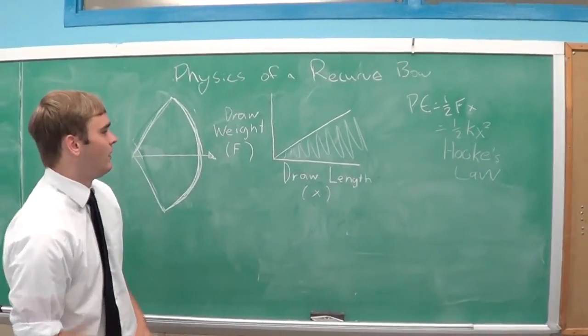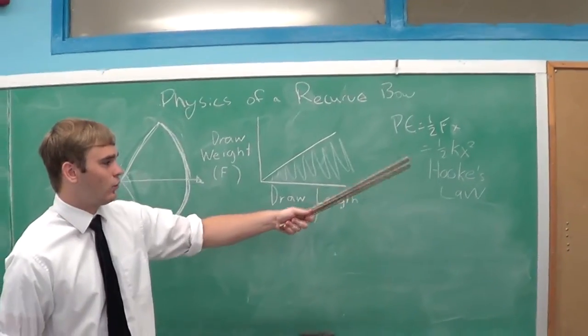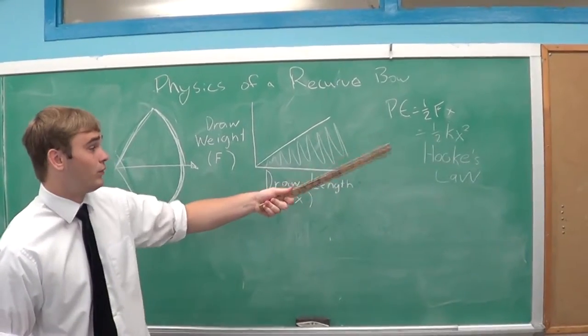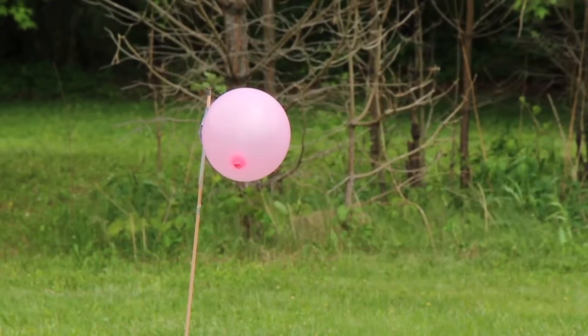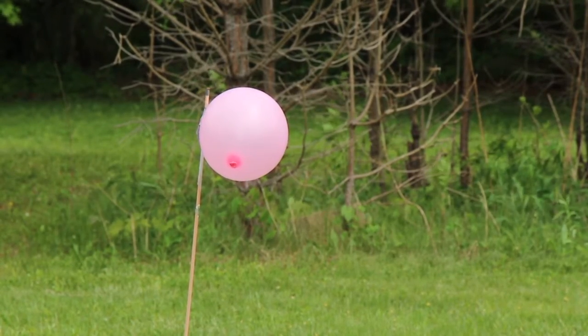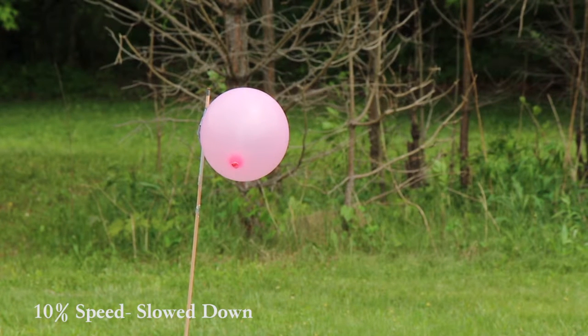So that makes sense. And as you can see, that's also equivalent to half kx squared, or Hooke's Law, which is also a good formula for potential energy. Now, when the bow string is released, it becomes kinetic energy, and that kinetic energy is what does all the damage. It's what gets that arrow into the target.